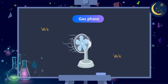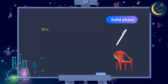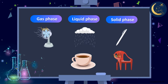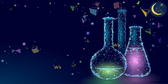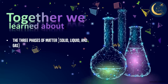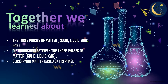So, my friends, we have found matter in its many different phases. Some of them are in the solid phase, such as the pen and the chair. And some of them are in the liquid phase, such as raindrops and coffee. And some of them are in the gas phase, such as the air coming from a fan and the air inside a balloon. Together, we learned about the three phases of matter — solid, liquid, and gas — and we now know how to distinguish between them and classify matter based on its phase.